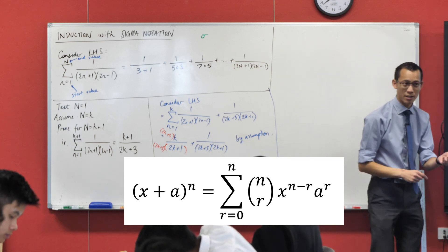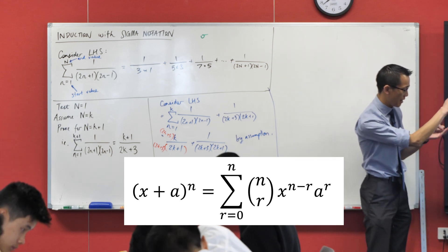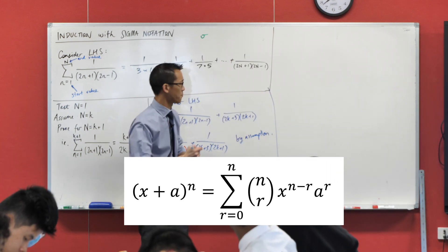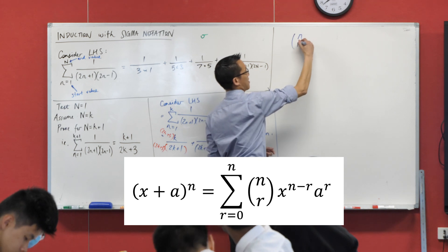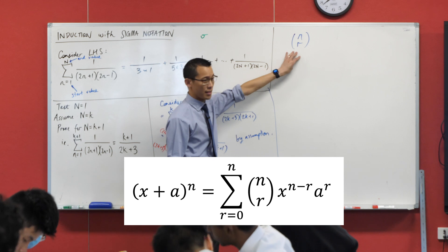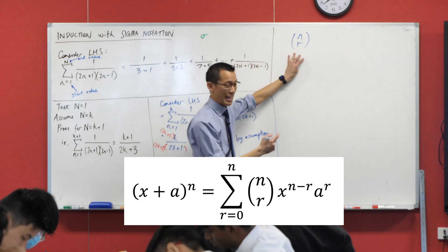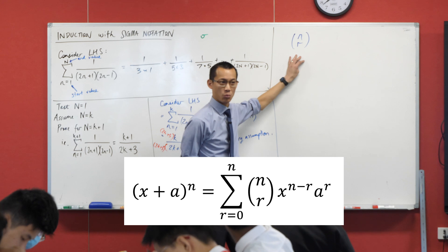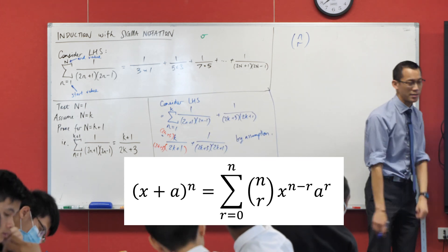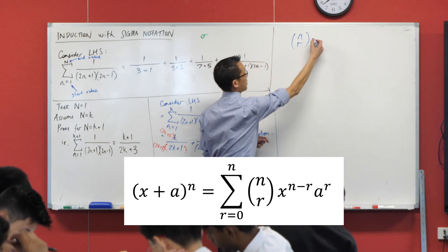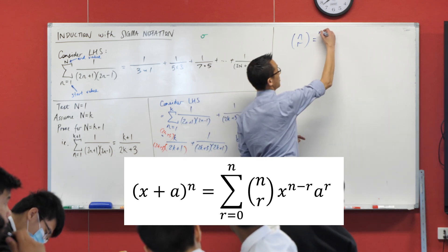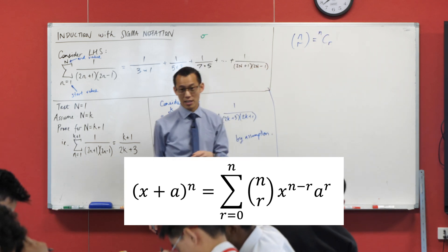You have x to the n minus r and a term a to the r, and then you have that thing in the brackets — it's got a special name. It comes from permutations and combinations. This particular object we call the binomial coefficient, and this is exactly the context in which you see why it's called that — it appears in front of all these x's and a's. By the way, that's not the only way to write it — there's another way: on your calculator it's nCr, where the C stands for 'choose' or 'combination'.